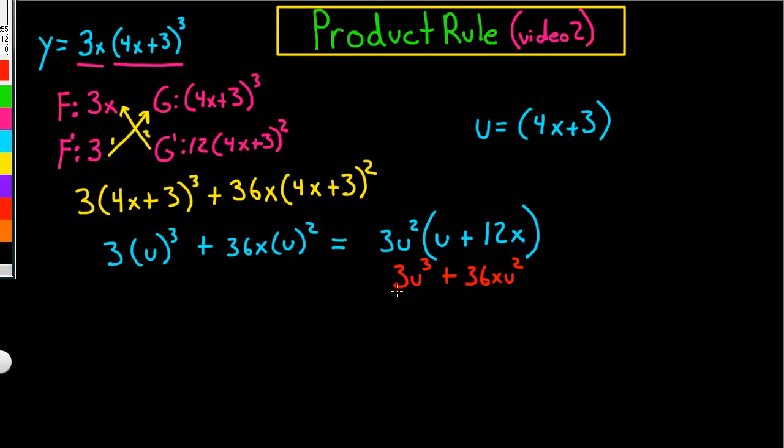So, now that we've checked it, let's fill in the parentheses. Alright, so, we've got 3u squared and that u is 4x plus 3. So, let's just put it in there, 4x plus 3 plus 12x and that's going to leave us with 16x plus 3.